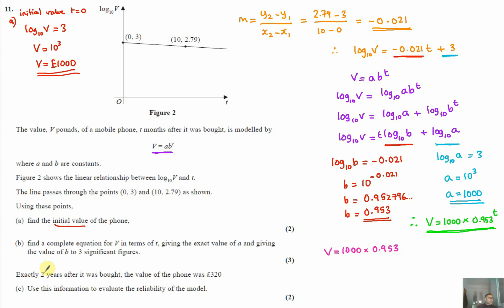Now here the key thing here, and so many people make this mistake, they put to the power of two because it's two years. But don't forget it says t months after it was bought. So two years equals 24 months. So therefore that's going to be to the power of 24.